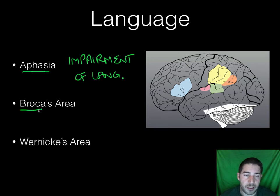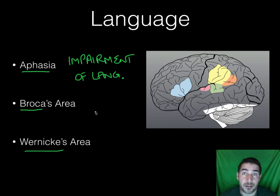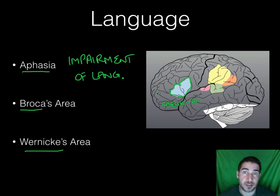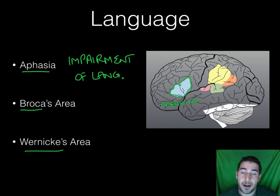Two areas we need to know are Broca's area and Wernicke's area, named after researchers who studied individuals with damage to these brain regions and noted what was lacking. Broca's area, shown in blue here, is responsible for actually speaking — moving your mouth in a complex pattern to produce sounds and make words. That's why babies don't do it right away and animals can't necessarily speak. Broca's area is in the frontal lobe, where a lot of our higher level processing goes on.